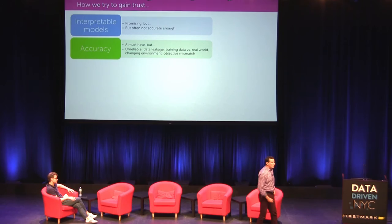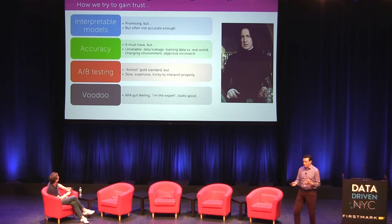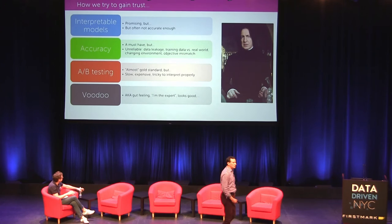So accuracy is important, but it's not the only thing you need. Often in practice you do things like A/B testing, which can be a gold standard in some settings, but they don't let you improve your system over time, and they tend to be really expensive and require a lot of data. So if none of these methods are working, what do people really do in the real world to gain trust in models? It's a technique that I call voodoo: you look at your model, it looks really cool, it was amazing, look at this one example, it was great — I'm going to deploy it in production.